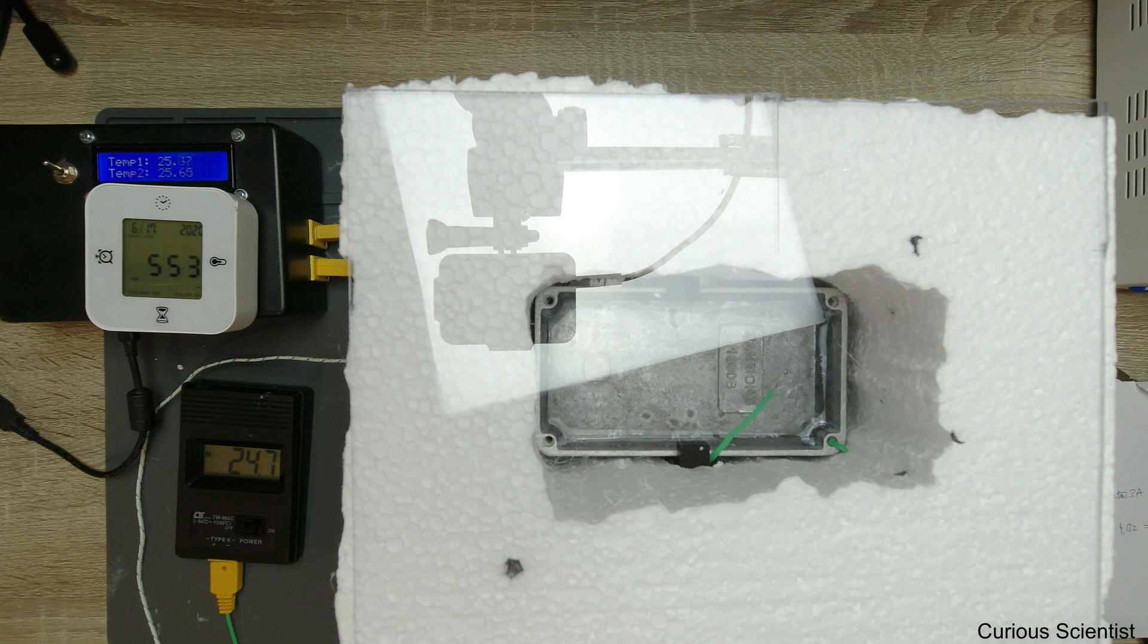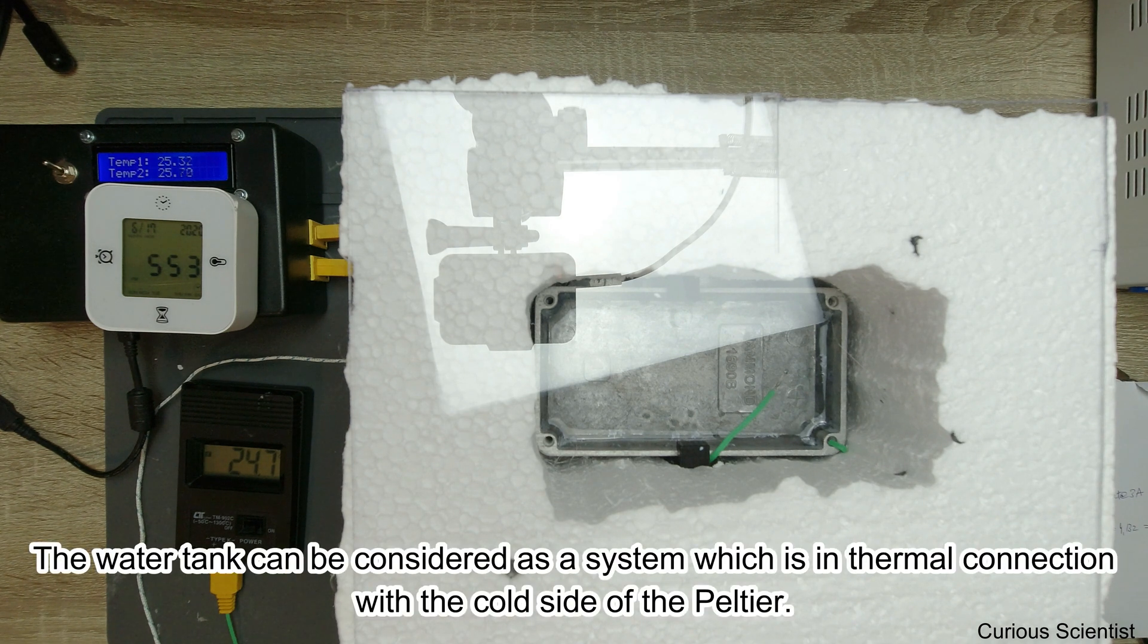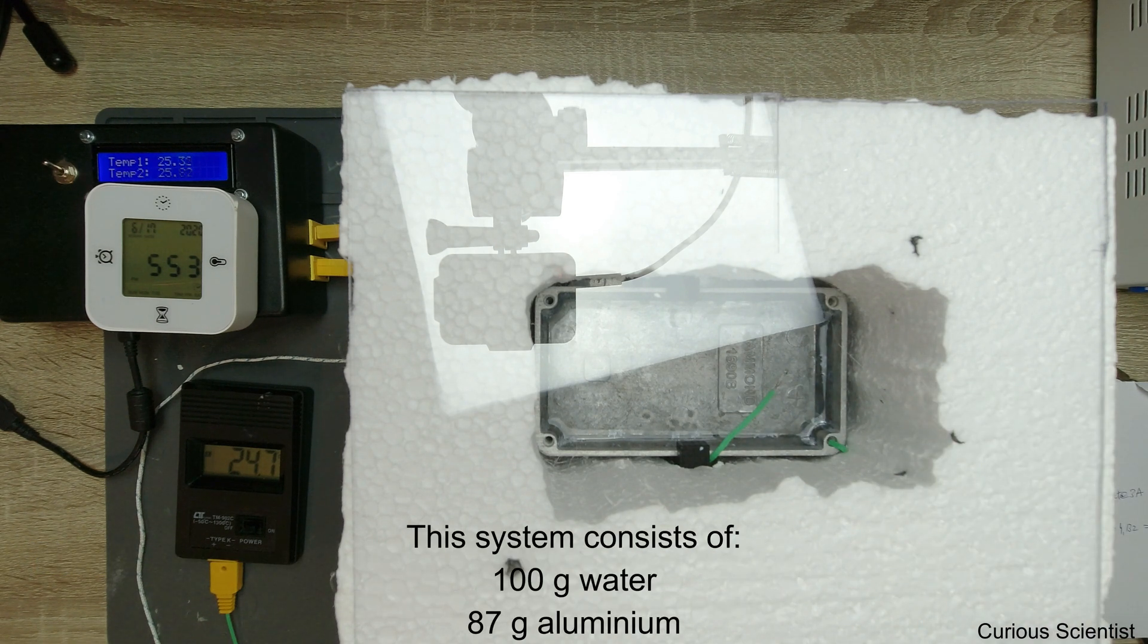In this water tank we have 100 grams of water and 87 grams of aluminum, because we also have to cool down the aluminum. We have to consider that.